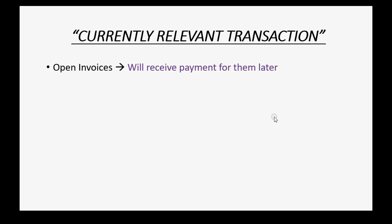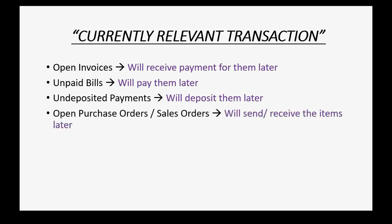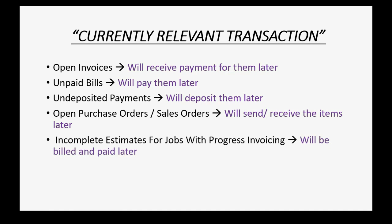Some examples of currently relevant transactions are: open invoices that we will receive payment later for, unpaid bills that we expect to pay later, undeposited payments that we will deposit later, any open purchase orders or open sales orders for merchandise inventory that we have not yet sent or received, or any incomplete estimates for jobs where you're a contractor doing progress invoicing. You will have to send invoices later for those estimates and then get paid for those invoices. So an open estimate for an open contract would be a currently relevant transaction because it's something you're still working on and whose details you would need in the new system.